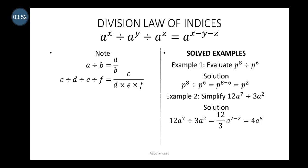Note: another notation used to replace the division sign is the 'over' line. For example, a divided by b equals a over b. Also, c divided by d divided by e divided by f equals c over (d times e times f). This interpretation of the division sign is very important because we'll make use of it in our examples.